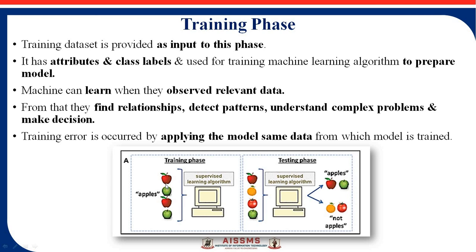Training error occurs by applying the model on the same data the model was trained on. For example, if you train the model with apple and again try to train with apple, an error will occur because the machine can be trained using the dataset only one time.